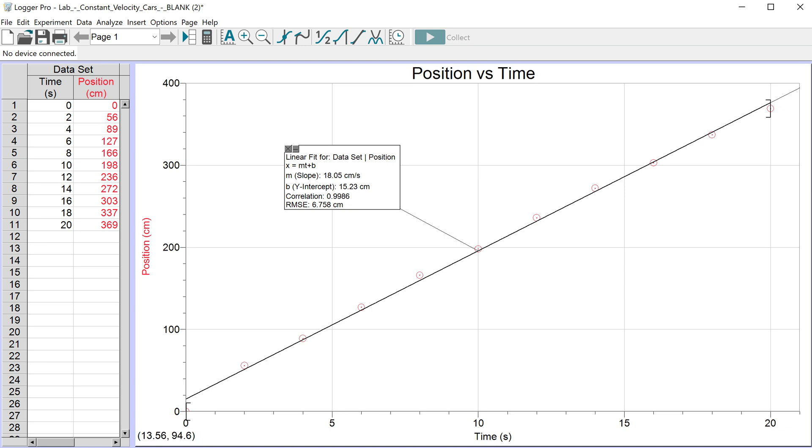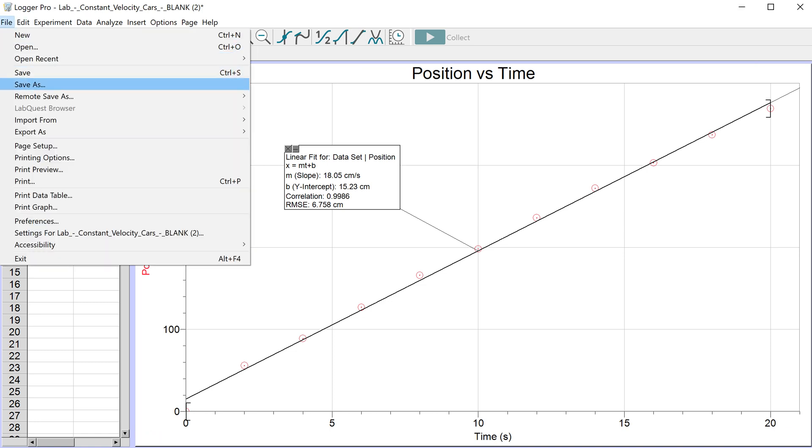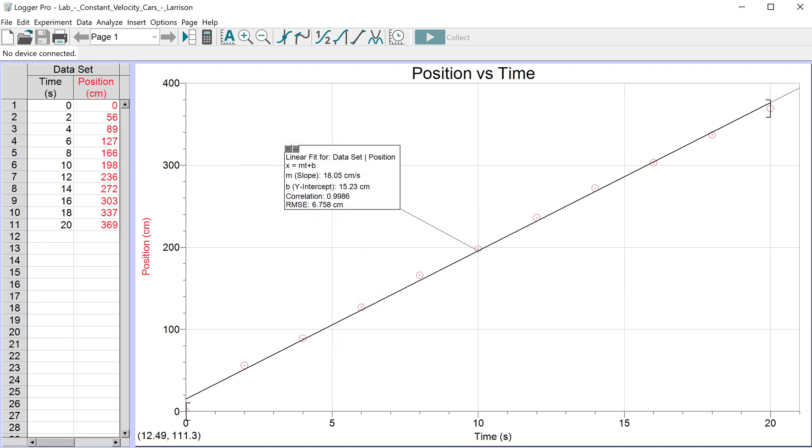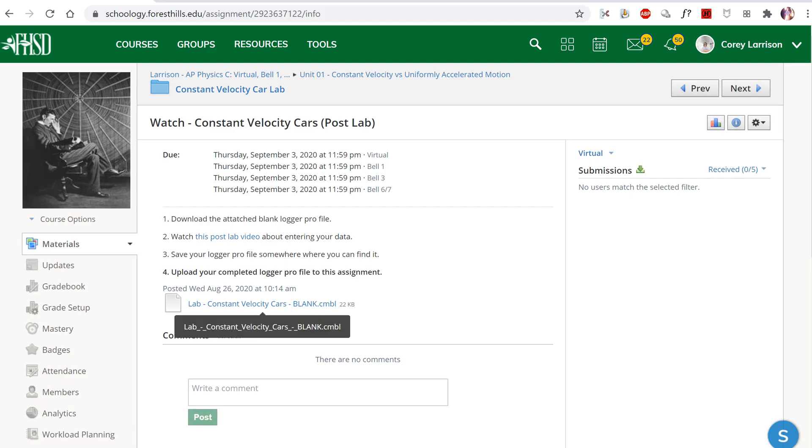At this point what I want you to do is save this LoggerPro file. You can go to file save as and it will tell you exactly where you're saving it. Most of you are probably going to save it to your download folder. Call it something, you can put your last name if you want. Then you're going to go back to the Schoology assignment and you are going to upload that LoggerPro file that's been filled out into this assignment.